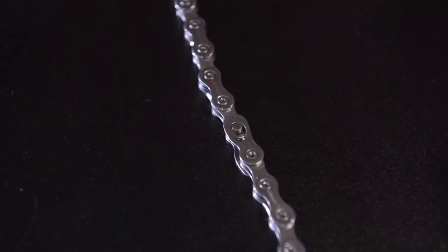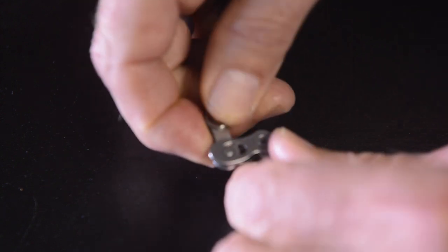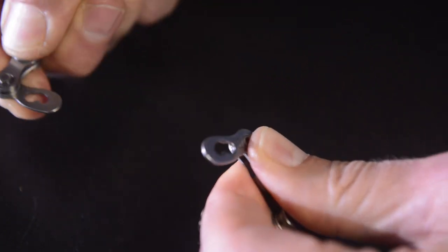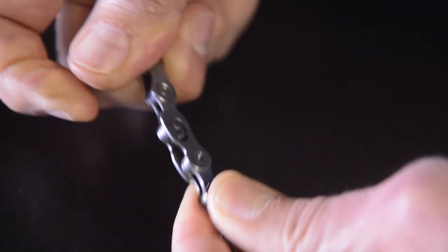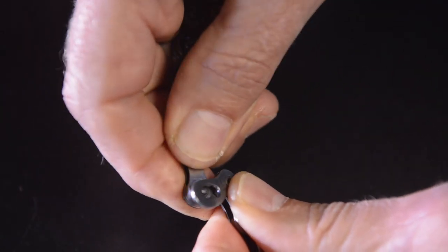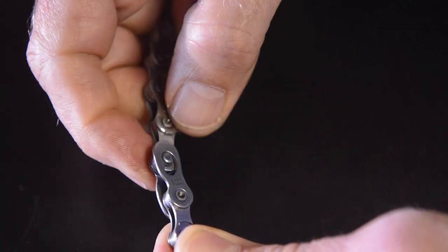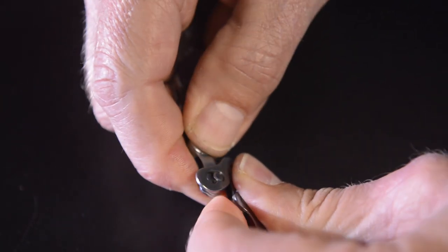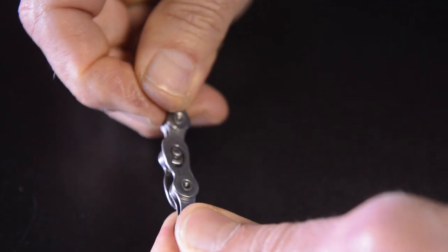The other thing Connex is famous for is the Connex link. The Connex link allows you to take your chain apart and put it back together again as often as you'd like. That makes cleaning a breeze, taking the chain off and putting it in your car and moving the bike around without getting things dirty a breeze. You can use this as often as you like, and I've been told you can use it on other chains as well.